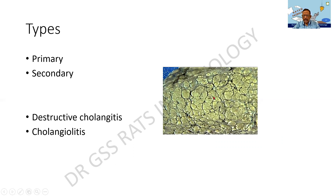Look at this picture. The paler color is the regenerating nodule and the darker lines are probably the bands of fibrosis which are dividing the parenchyma. Let us have this in mind.